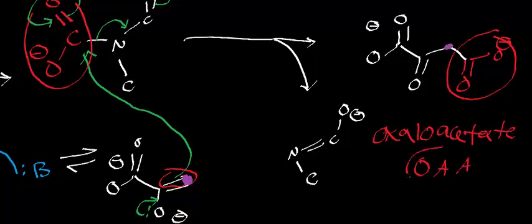This reaction occurs in the mitochondria. In a later video, we'll see that you'll actually have to have some other mechanisms to get oxaloacetate out of the mitochondria, because there are no oxaloacetate transporters in the mitochondrial membrane. So something else is going to have to happen to oxaloacetate — it won't just leave.